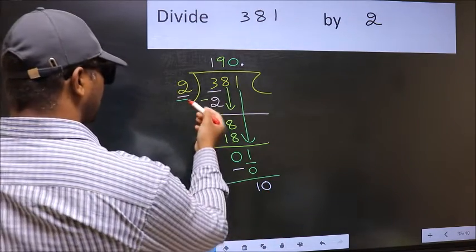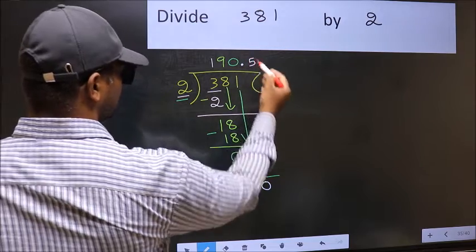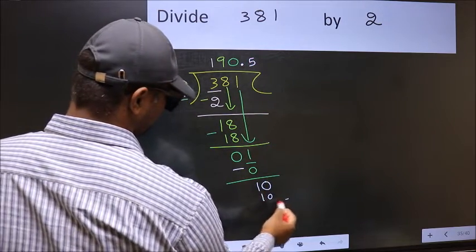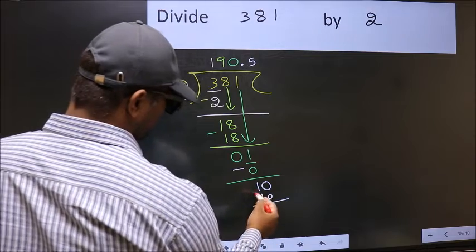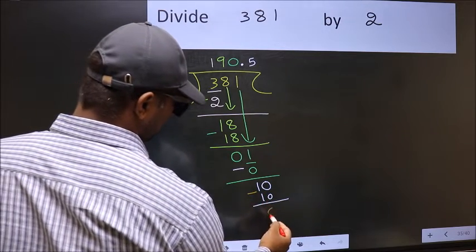So, 10. When do we get 10 in 2 table? 2, 5, 10. Now you should subtract. 10 minus 10, 0.